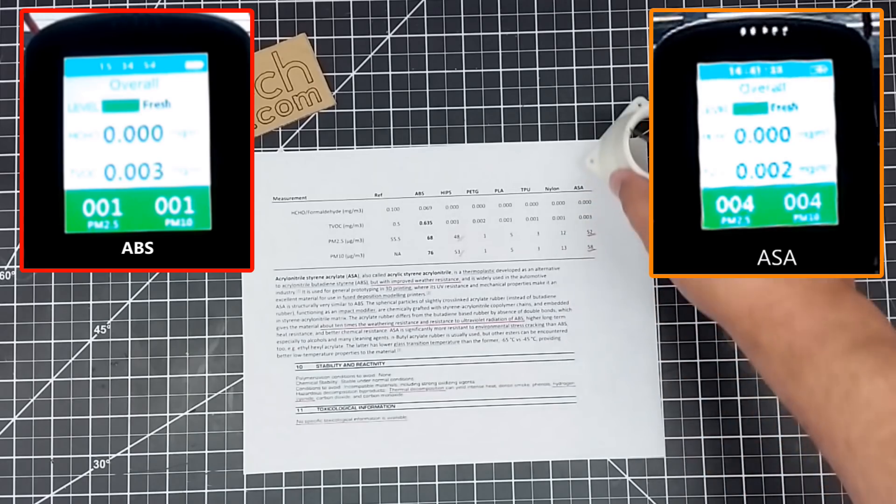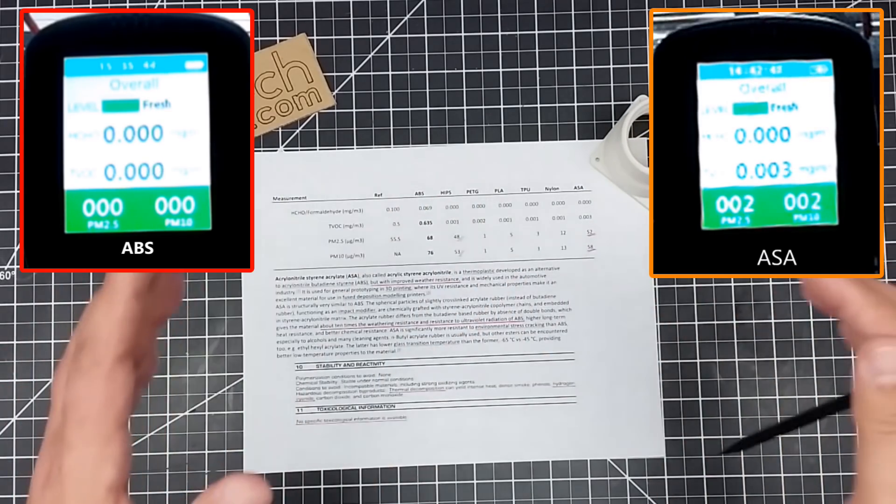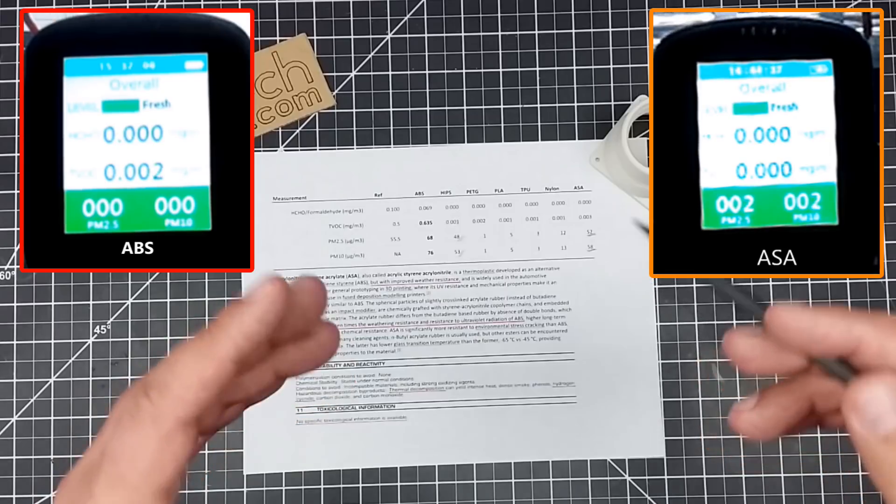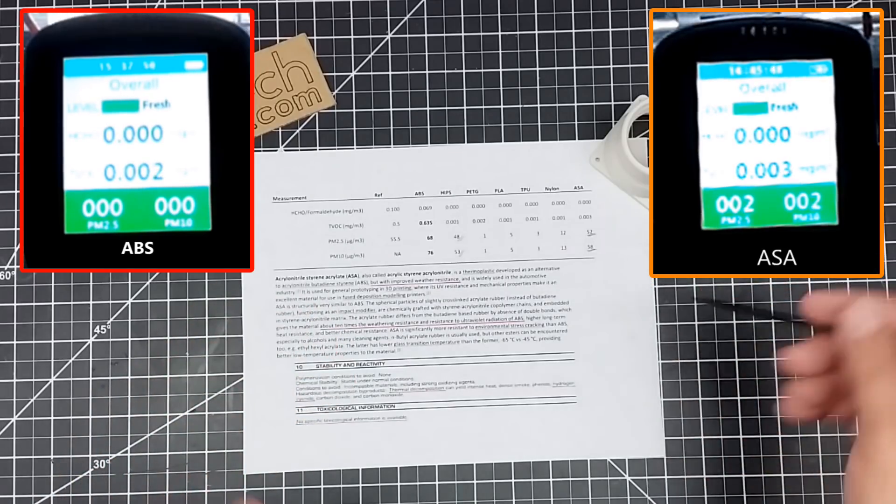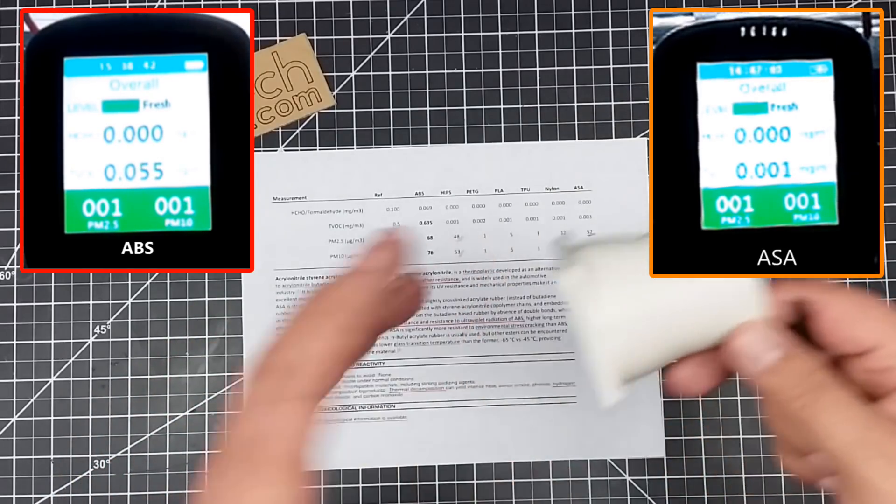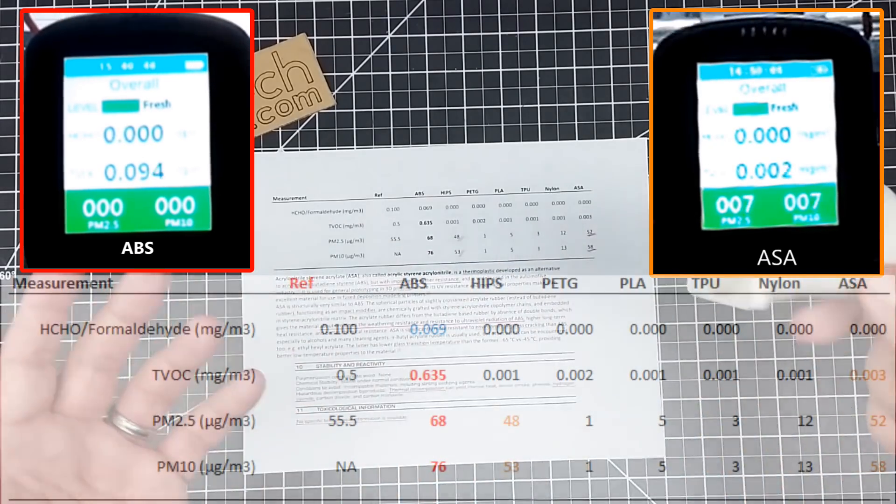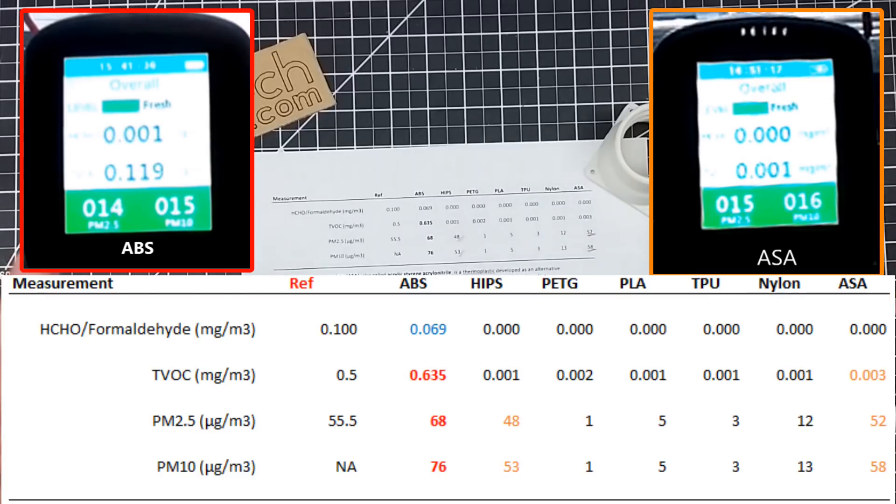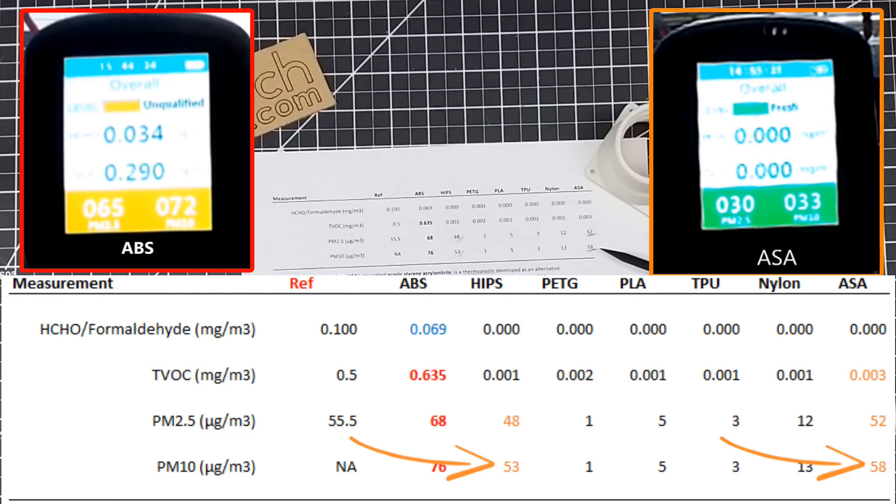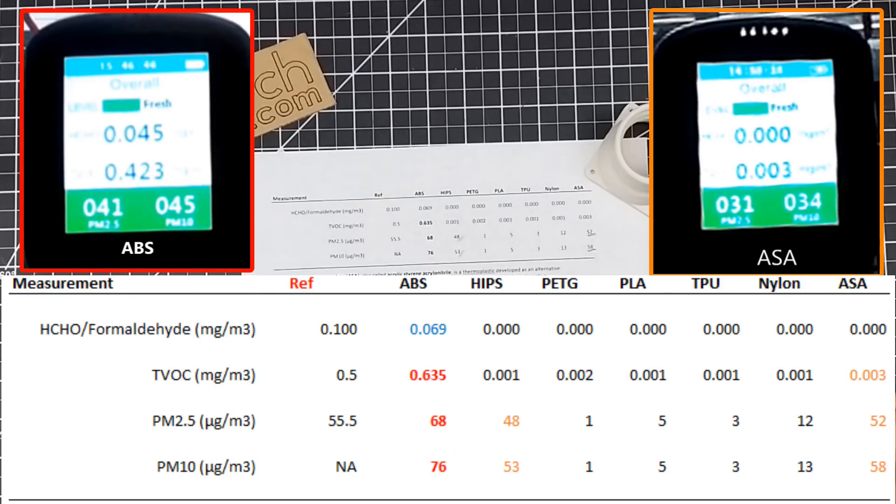So first thing is, one of the big things with this whole piece I looked at is particulates, and so very clear, this put off quite a few particulates, which didn't surprise me. It's a cousin to ABS and HIPS, and so therefore I expected it, and I got pretty much what I expected. And actually, I got a greater number than even HIPS. So 58 on the 10 micron stuff, and 52 on the 2.5.